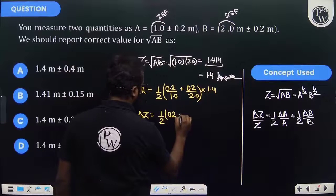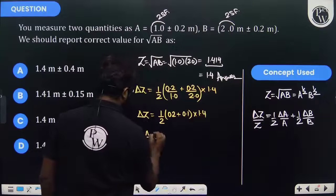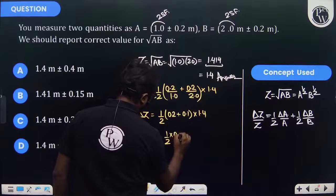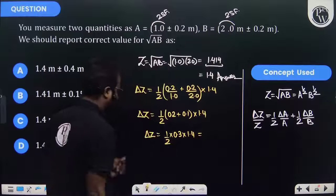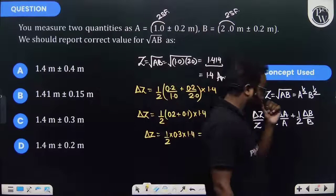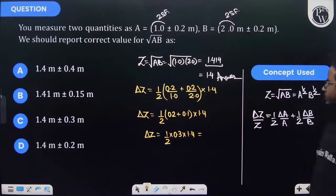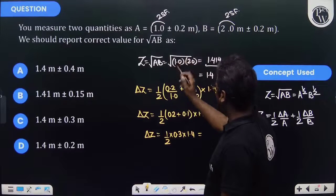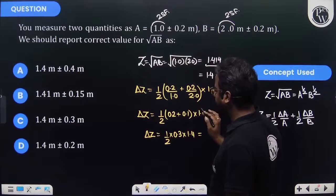So ΔZ will be (1/2) × 0.3 × 1.4. If we multiply these numbers, half of 0.3 is 0.15, and that's correct.